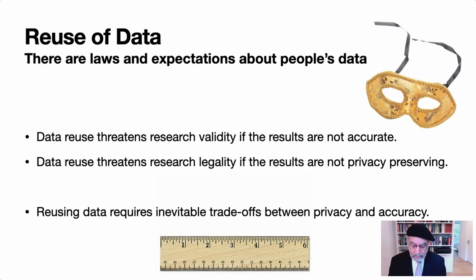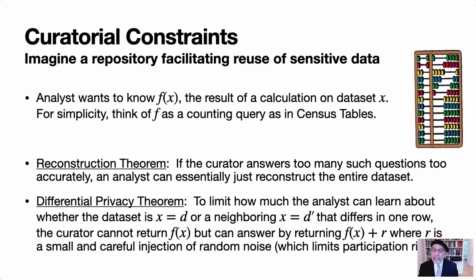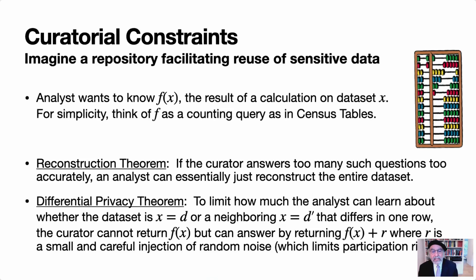Let me explain a bit more. Imagine a repository that's trying to facilitate the reuse of sensitive data. An analyst comes along who wants to know the value of f(x) — the result of a calculation on the data set x. You can think of f as a counting query of the sort that goes into making census tables. There's a theorem called the reconstruction theorem that says if the curator answers too many such questions too accurately, the analyst can essentially reconstruct the entire data set.